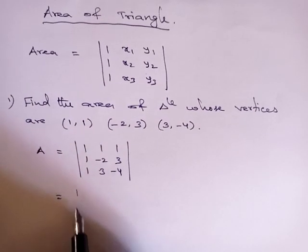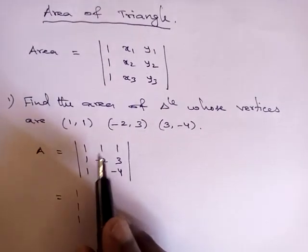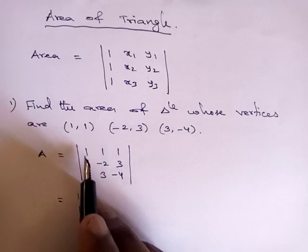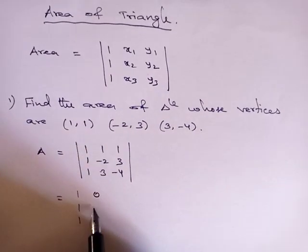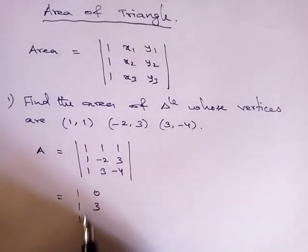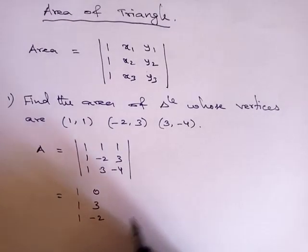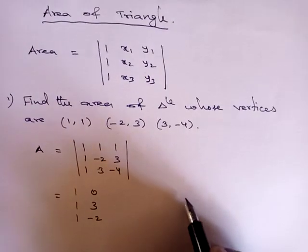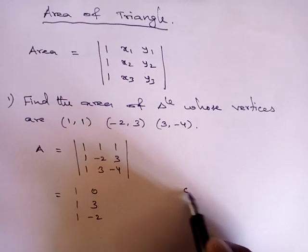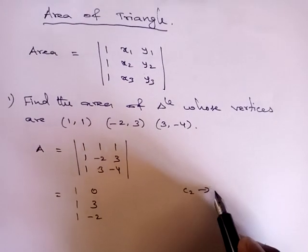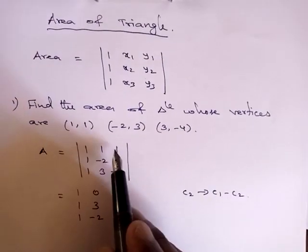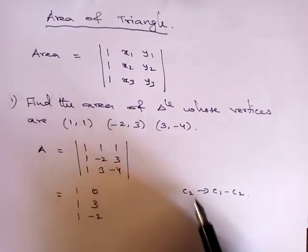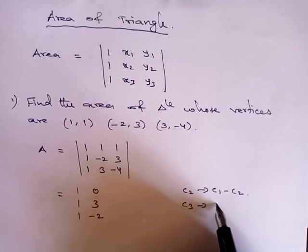First column I am writing as it is. Second one, this minus this - zero. This minus this becomes three. This minus this becomes minus two. That is, I am doing c2 tends to c1 minus c2. Next, c3, I am writing like this: c3 tends to c1 minus c3.